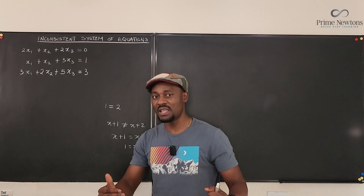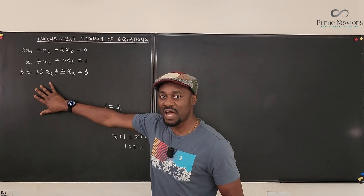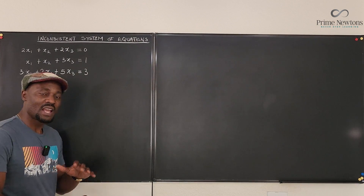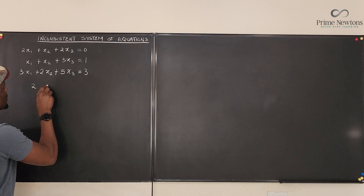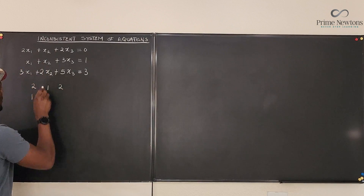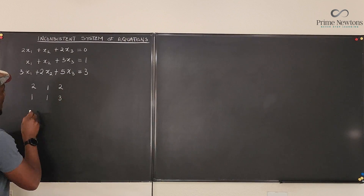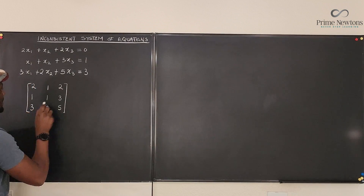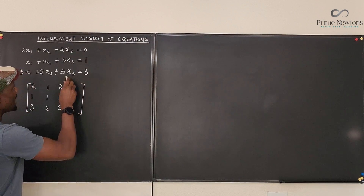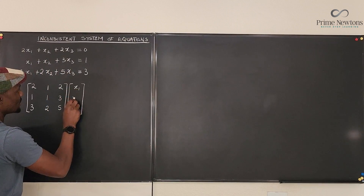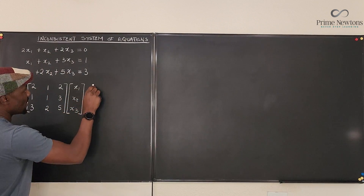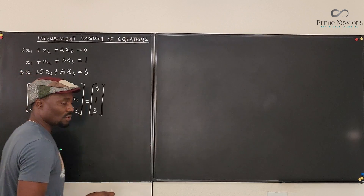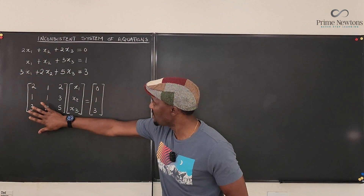Sometimes a system of equations is set up in such a way that it cannot be solved because there's a lie embedded in it — but you can't see it because there are so many things written down. So let's use matrices to decipher this and figure out why it is inconsistent. From the previous videos, I showed that you can write this as the matrix with coefficients 2, 1, 2 / 1, 1, 3 / 3, 2, 5, multiplied by the column vector x1, x2, x3, giving the right-hand side 0, 1, 3.